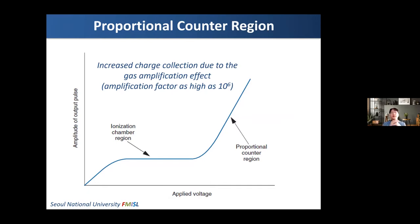There is another type of gas-filled detector that operates in the proportional count region. As I told you, the output characteristics of the gas-filled detector depend on the applied voltage. If the voltage is too low, recombination of charges is dominant, but after some voltage, the output pulse amplitude reaches a constant because all generated charges are collected by the anode and cathode. This is the ionization chamber region. But if we increase the applied voltage more and more, after some point, the output amplitude increases again.